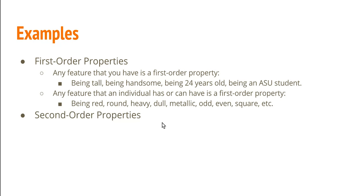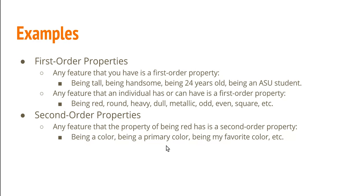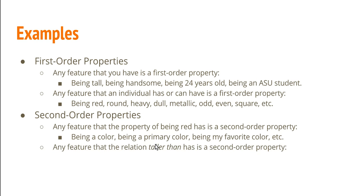Second order properties are a little bit trickier, but we can multiply examples by considering any first order property. So for example, take the property of being red, and ask: what features does that property have? Well, it has the property of being a color, the property of being a primary color, and red also has the property of being a property. In general, any feature that a first order property has or could have is a second order property.